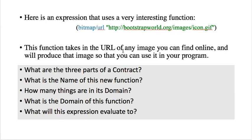Here's an expression that uses a very interesting function. This function takes in the URL of an image you find online and will produce that image that you can use in your program. Pause the video and type in this function into Dr. Racket so you can see what it does. Then in your video notebook, answer these questions: What are the three parts of a contract? What's the name of this function? What is the domain? And what will the expression evaluate to?